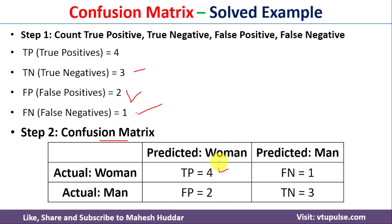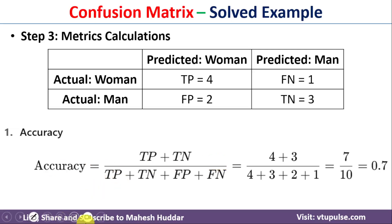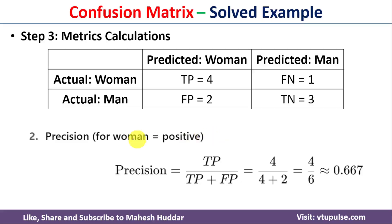Next we find accuracy. Accuracy is calculated as (true positive + true negative) divided by number of records. True positive = 4, true negative = 3, so 4 + 3 = 7, divided by 10 records, which equals 0.7.